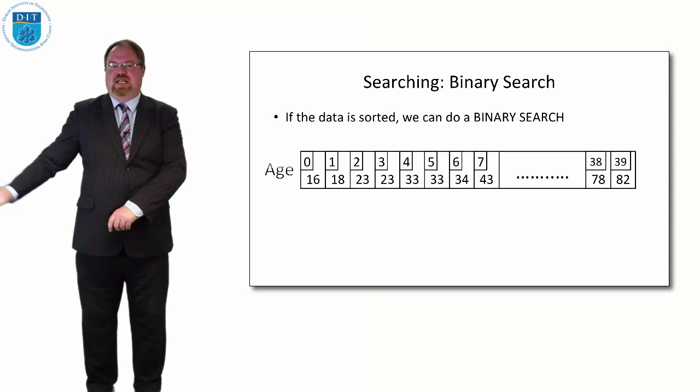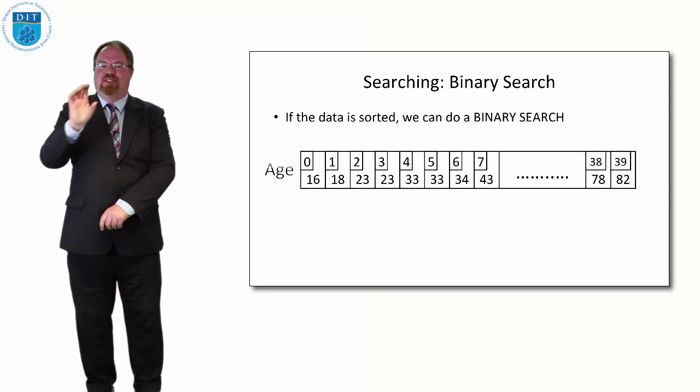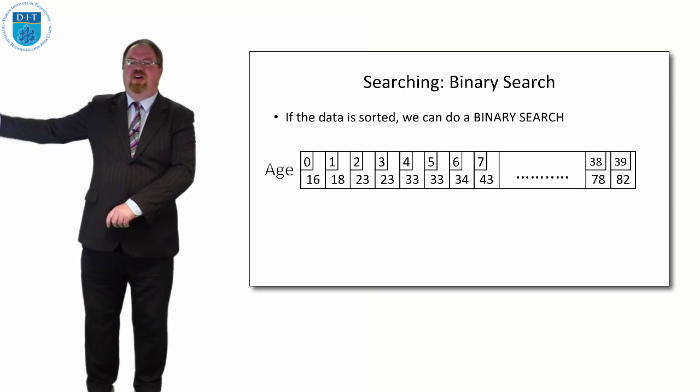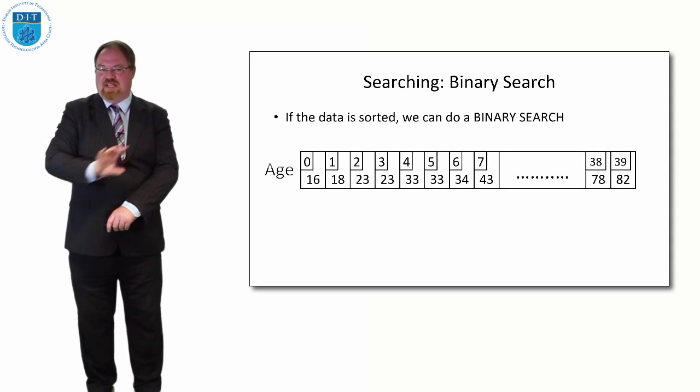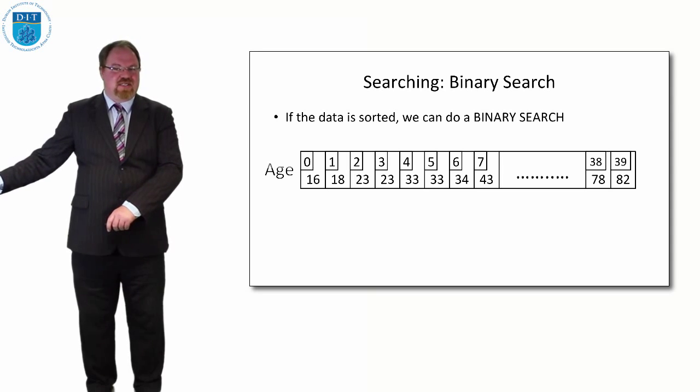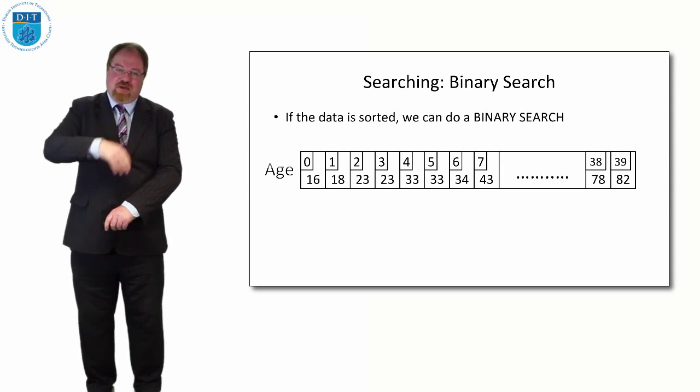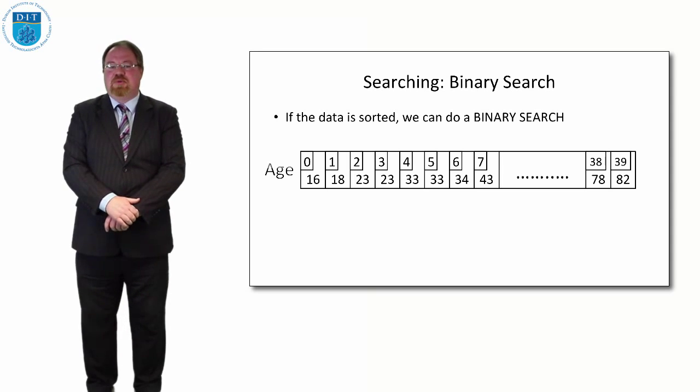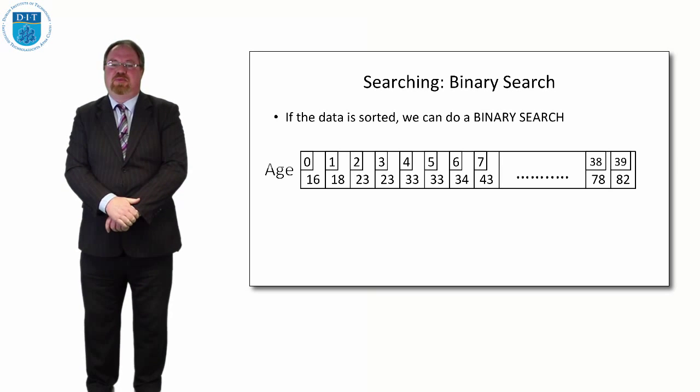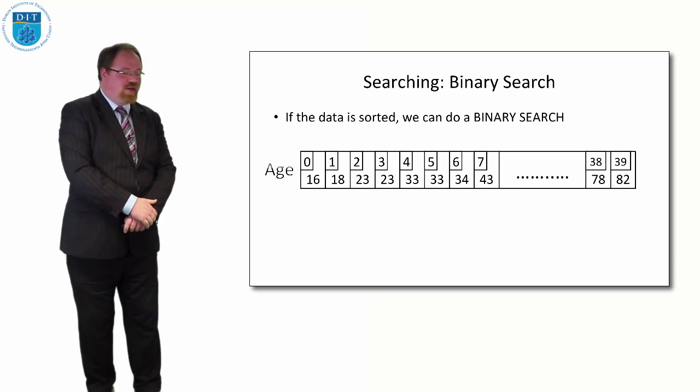So this is the data sorted now. We have 16, 18, 23, 23, 33, 33, 34, 43 all the way up to 78 and 82. So all the values are in ascending order now. If we have the values in ascending order which will take a little bit of time to do to sort it and we look at sorting algorithms later. Once we've got the data sorted then we don't need to do a sequential search anymore. We can do what's called a binary search. So how does that work? How that works is we jump to the very middle of the array and say is the value we're looking for less than or greater than the middle value.